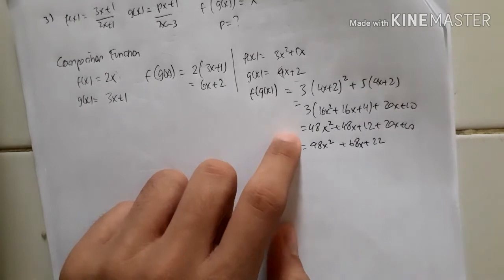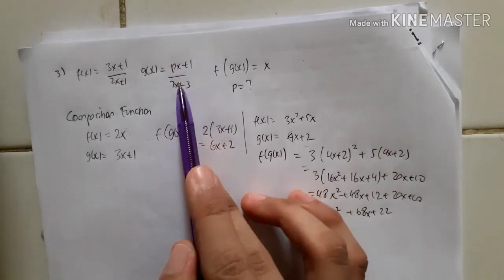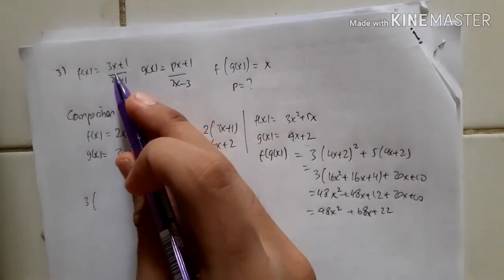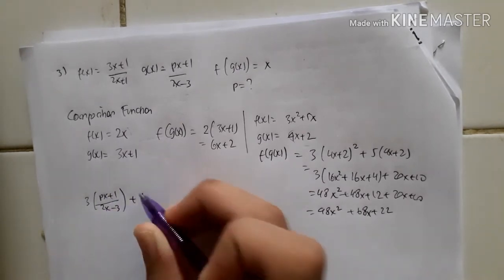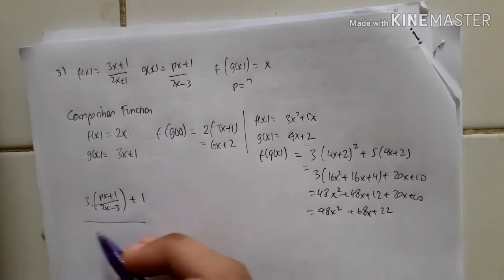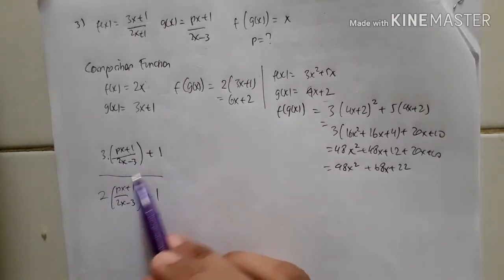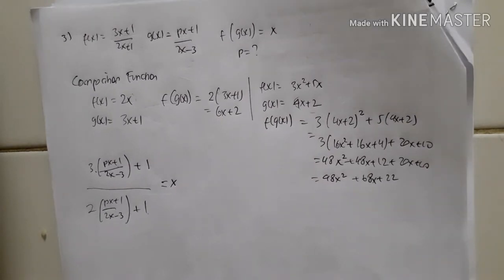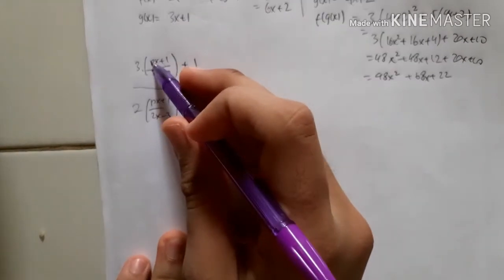That gives 48x² + 68x + 22. This is the same approach for the original question — you compose g(x) into the variable of f(x). So you substitute g(x) = (px + 1)/(2x - 3) into f(x), giving: [3·(px+1)/(2x-3) + 1] / [2·(px+1)/(2x-3) + 1] = x.